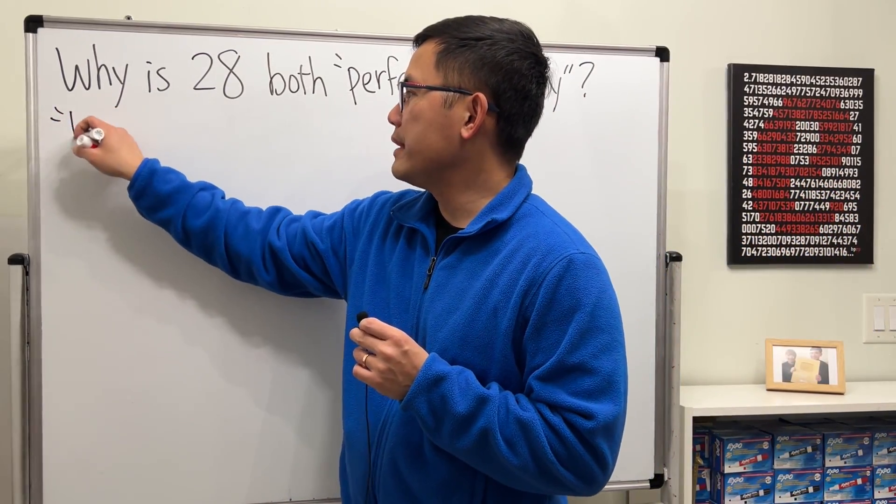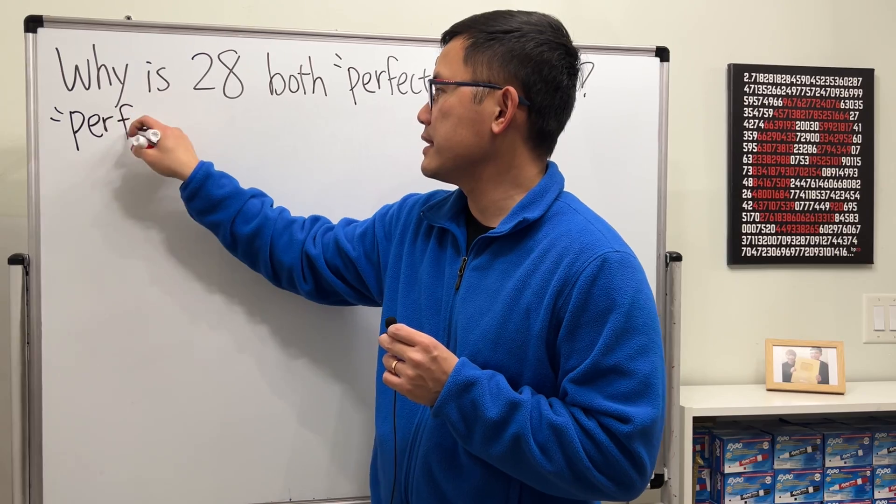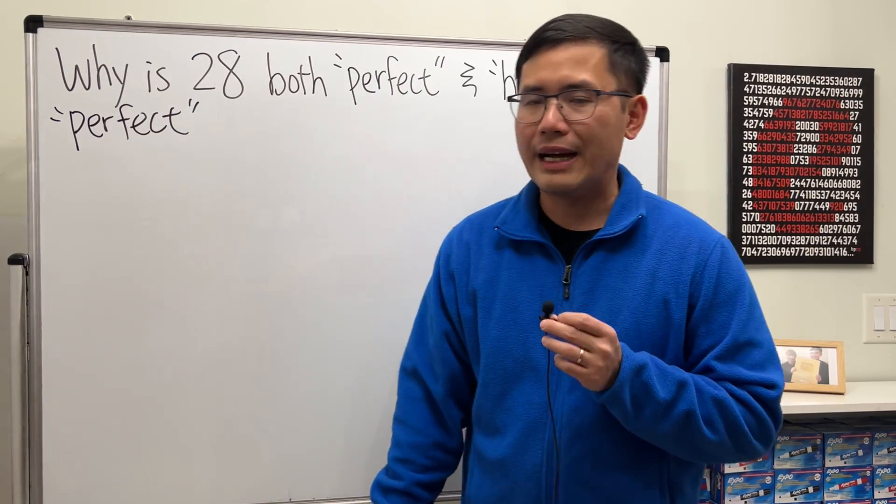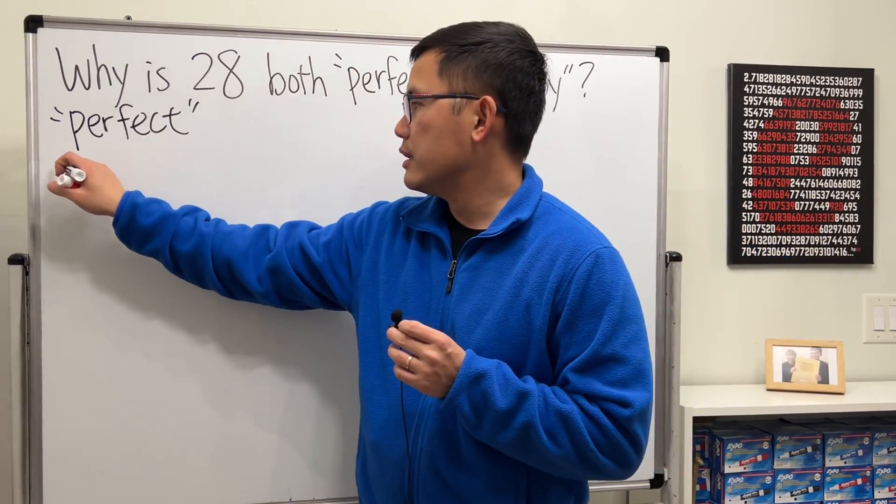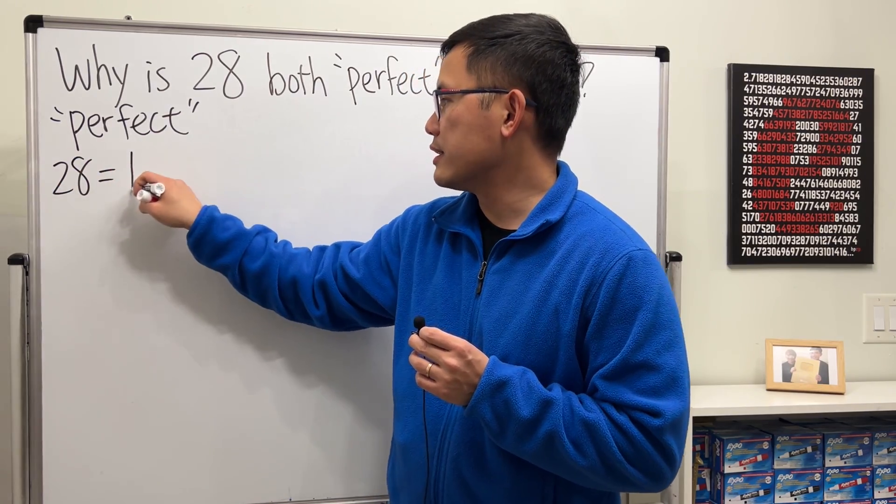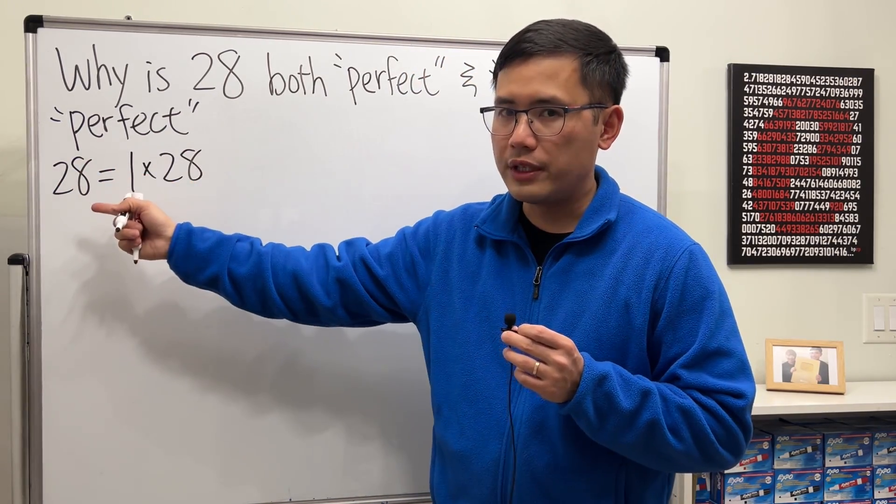First, let's talk about what makes 28 perfect. To do so, we will have to look for its factors. So, 28, let's write it as 1 times 28. So these are the factors of 28.